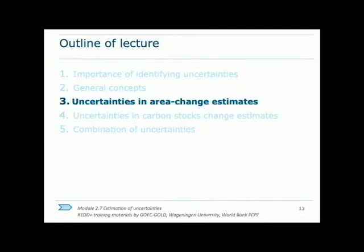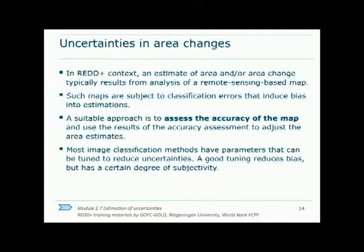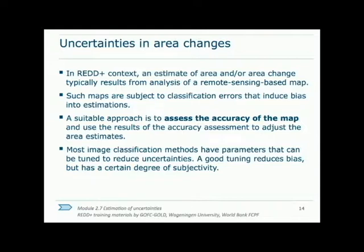Moving on to uncertainty in area change estimates, or activity data. In the REDD+ context, area and area change estimates come from maps derived from remote sensing data. Due to clouds and other image noise, the absence of training data, and general shortcomings in classification techniques, there are often biases in the estimates. The accuracy of these maps can be assessed through an accuracy assessment, and the results can be used to remove the bias in the area estimates.